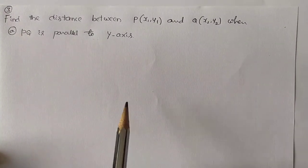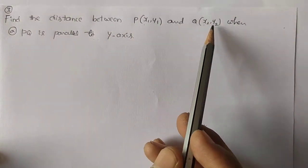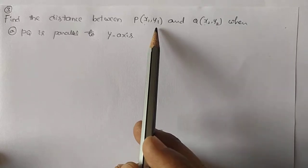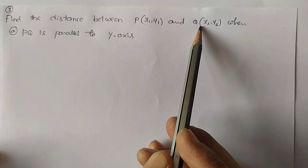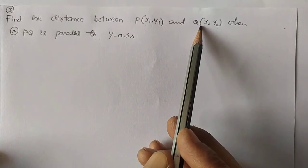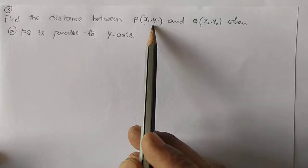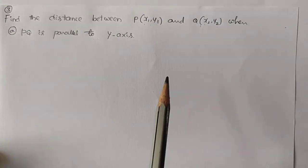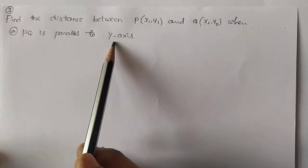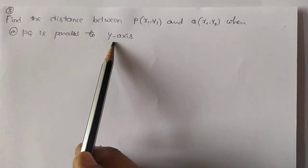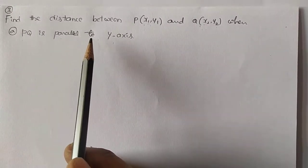We know the distance between the points P(x1, y1) and Q(x2, y2) is the square root of (x2 minus x1) whole square plus (y2 minus y1) whole square. But he is asking: what is the distance between P and Q when PQ is parallel to y-axis?